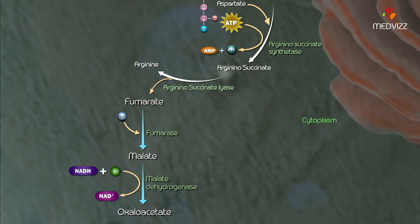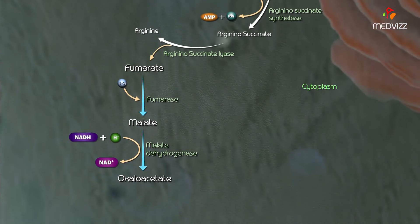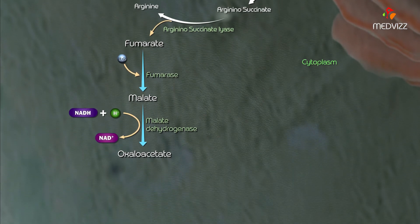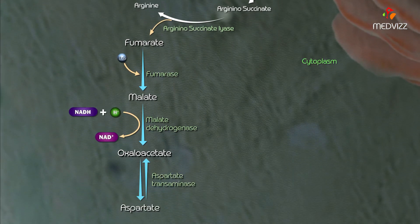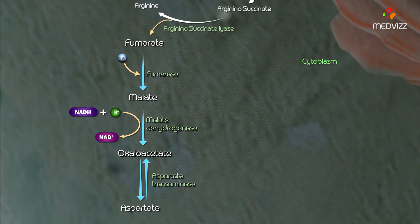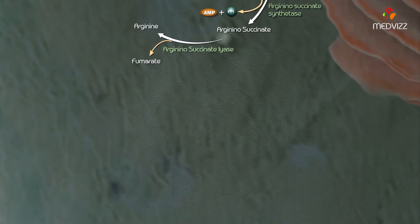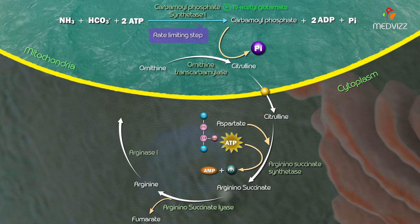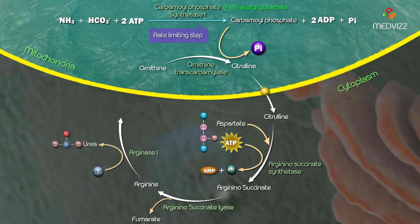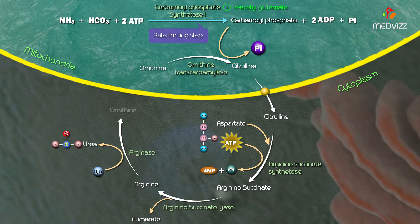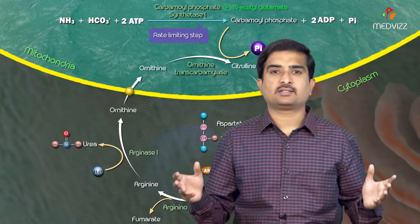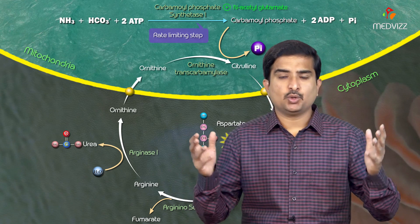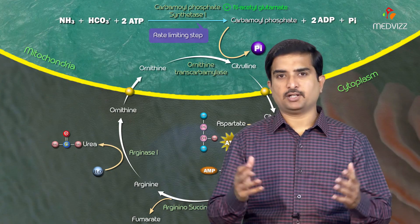The oxaloacetate formed in the reaction is converted into aspartate by transaminases, ensuring that the flow of nitrogen into the cycle is maintained constantly. Finally, arginase 1 catalyzes the hydrolysis of arginine to yield urea and regenerate ornithine, completing the urea cycle.